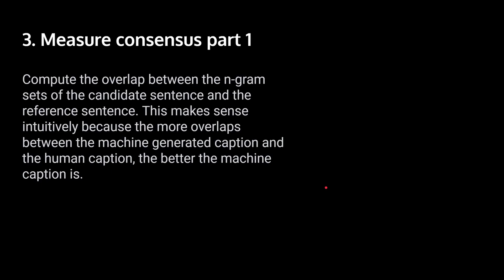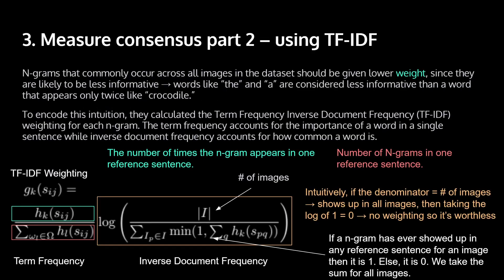And the third step, I divided this into two parts because it's kind of long. So the first part of the third step is that, intuitively, we're trying to compute the overlap between n-gram sets of candidate sentence and the reference sentence. This makes sense because the more overlaps between the machine generated caption and the human caption, the better the machine caption is.